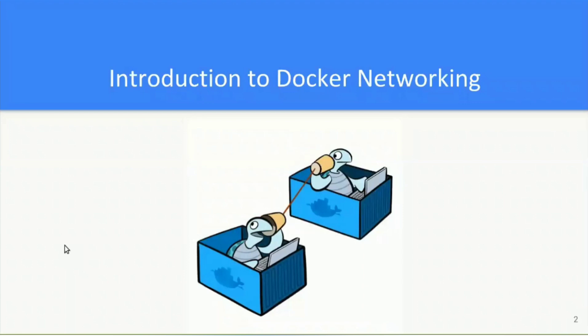Before understanding this, let us see the typical Docker topology, which will help us in understanding networking. A Docker host is nothing but a physical server — like a bare metal or VM on a cloud or on-premise — which has Docker daemon running, taking care of managing multiple Docker containers.